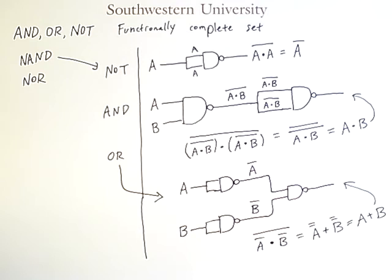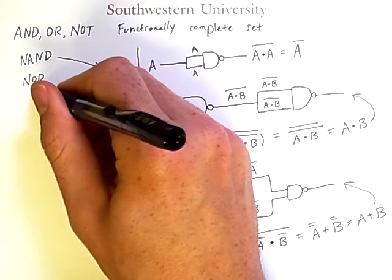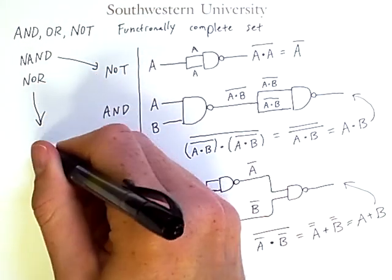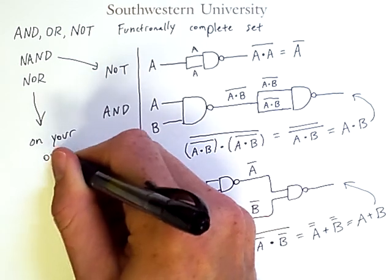However, keep in mind that when computing more complex Boolean functions, we may be able to find ways to simplify the result using Boolean algebra and use even fewer gates than might initially seem necessary. You can do something similar to this using NOR gates, but I will leave that for you to do on your own.